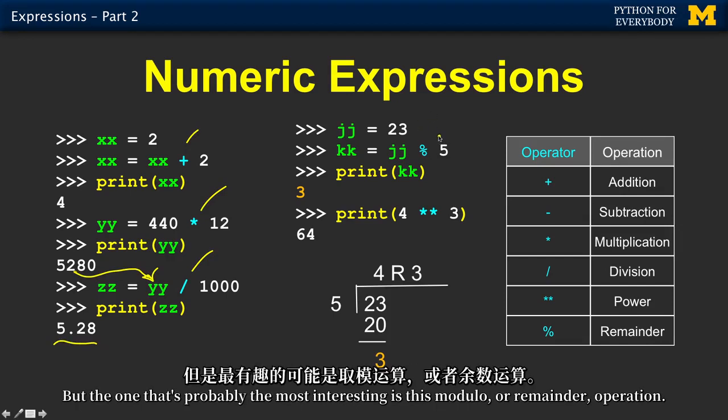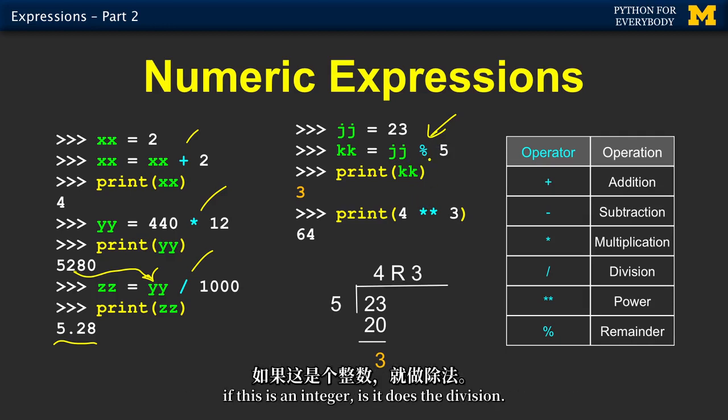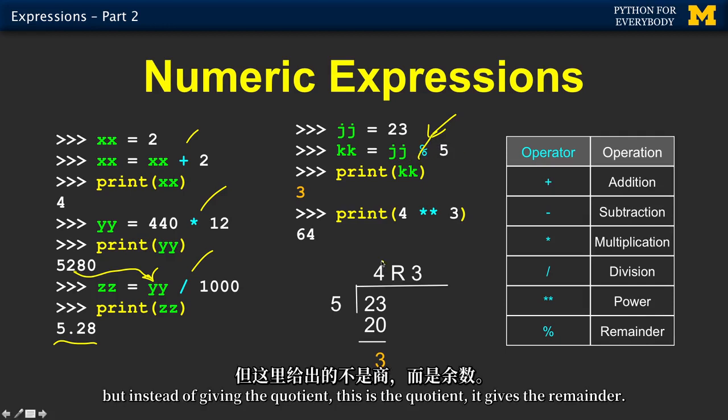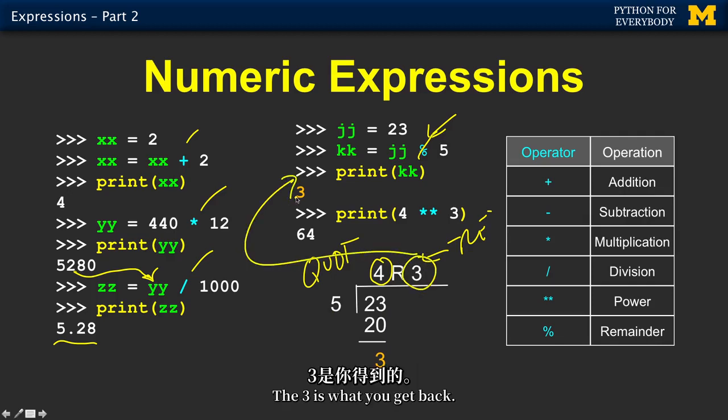But the one that's probably the most interesting is this modulo or remainder operation. The way the remainder operation works, in particular if this is an integer, is it does the division. It's almost like a division, j divided by 5, but instead of giving the quotient, this is the quotient, it gives the remainder. So 5 divided by 23 is 4 remainder 3. The 3 is what you get back.